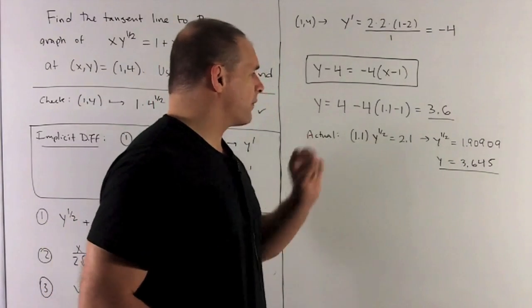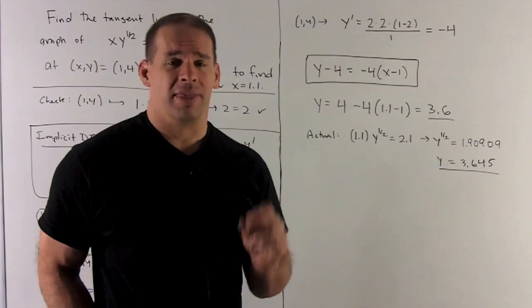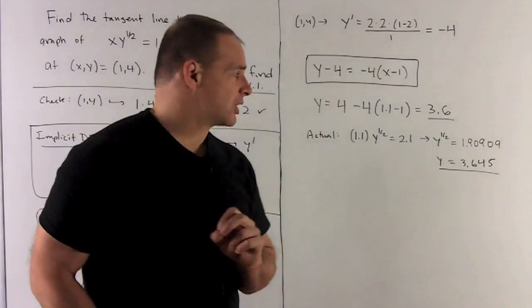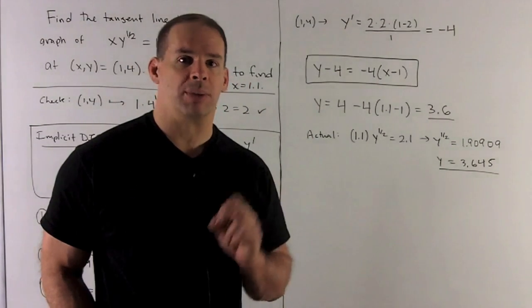So when I solve for that using the calculator, we get 3.645. And you'll notice that point for y is coming out very close to what we got at the tangent line. So our approximation is decent.